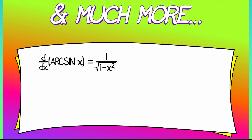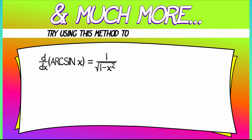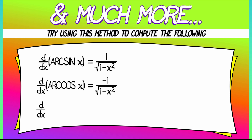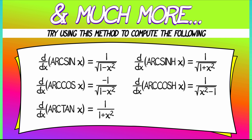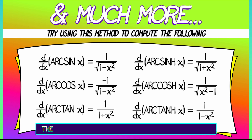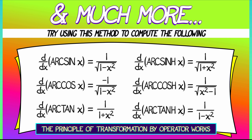From this, you ought to be able to see the pattern of how this works. Try using this method to compute the derivative of arc cosine of x, or the derivative of arc tangent of x — what operators would you use to undo those? Then move on to arc hyperbolic sine, arc hyperbolic cosine, and arc hyperbolic tangent. It's worth looking for patterns to see how these inverse functions relate to one another. This principle of using operators to transform one type of problem into another, hopefully more doable, is a very deep idea in mathematics, and it works for more than just derivatives.